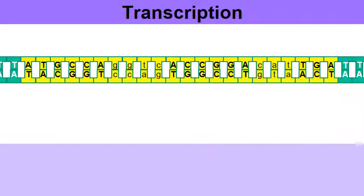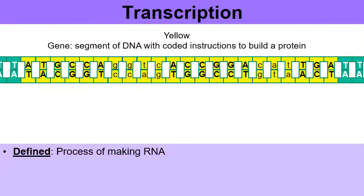Let's begin to break down the process of transcription, the process of making RNA. In yellow, that's a gene—a segment of our DNA with coded instructions to build a protein. The A's, T's, C's, and G's are the instructions.